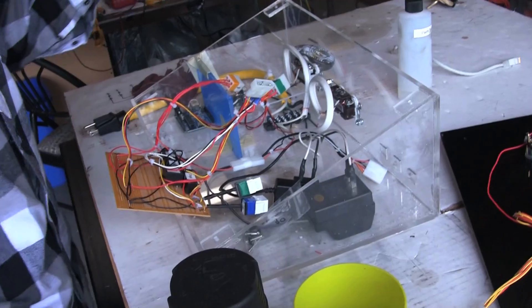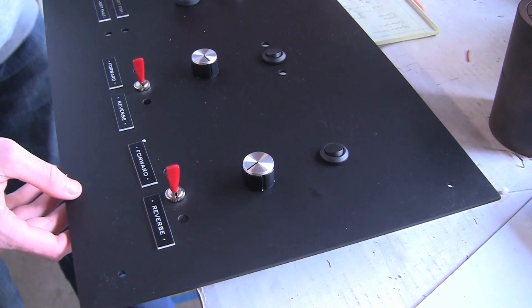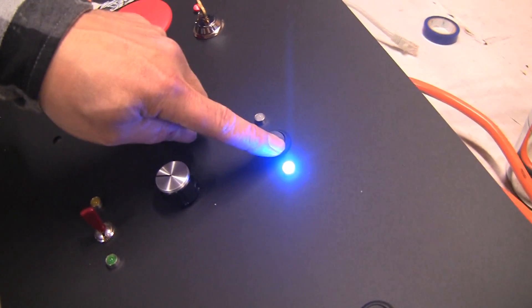Likewise here. This is the automatic to manual override. So again, if we see anything wrong and we need to take control, we hit this and that gives us control.